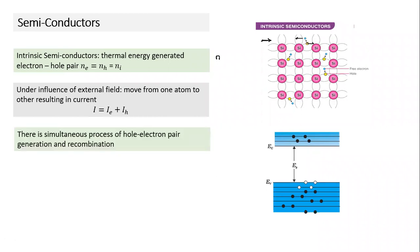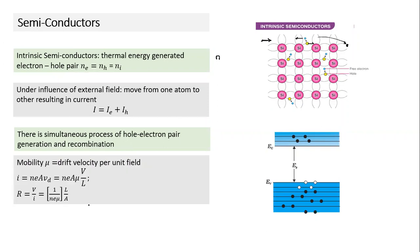When a conduction electron and a hole recombine, it destroys the electron-hole pair. Due to heat, electron-hole pairs are continuously generated and recombination also takes place. In steady state, the rate of generation equals the rate of recombination, so Ne and NH remain constant. At a given temperature, the concentration of free electrons equals the concentration of holes — both are constant.